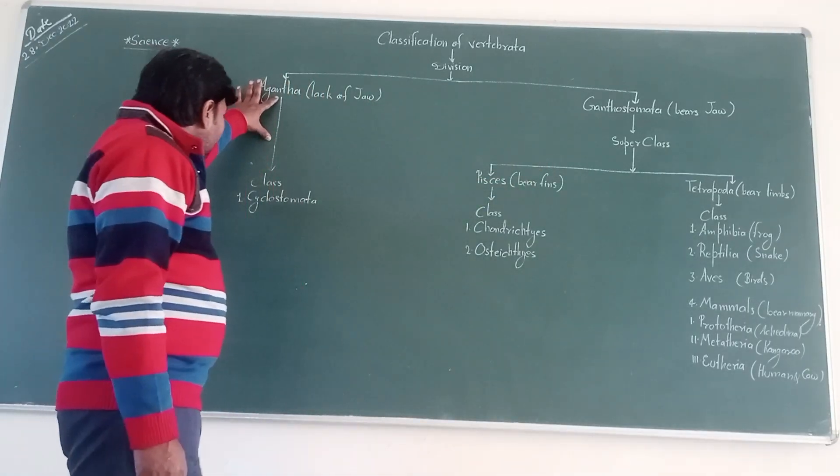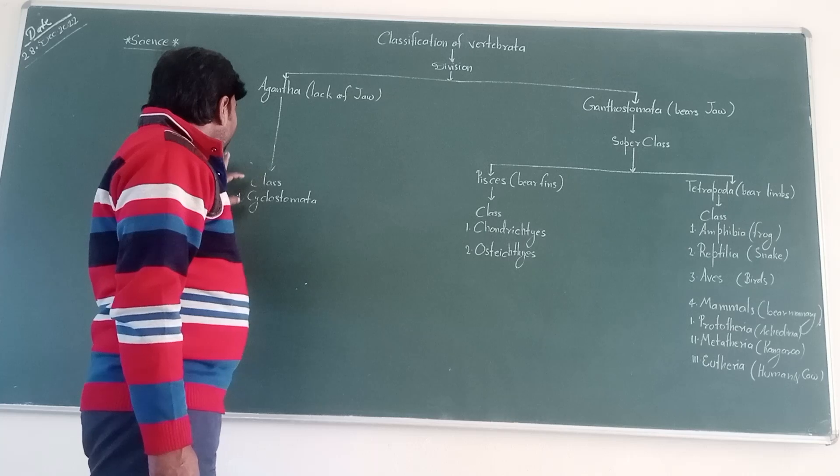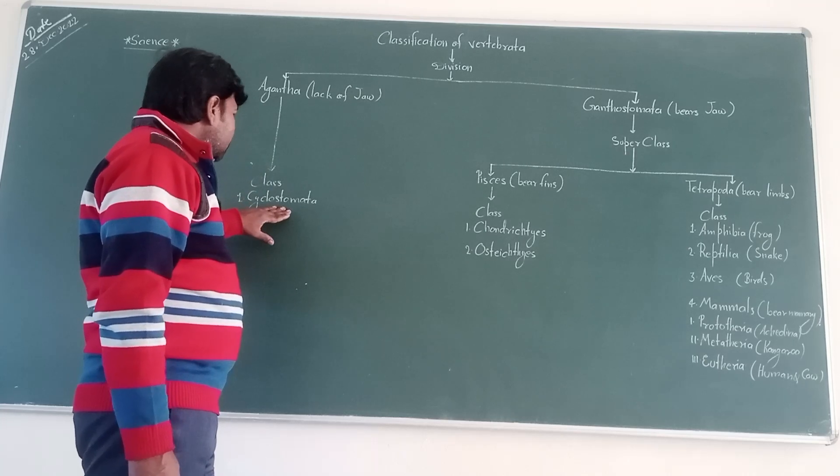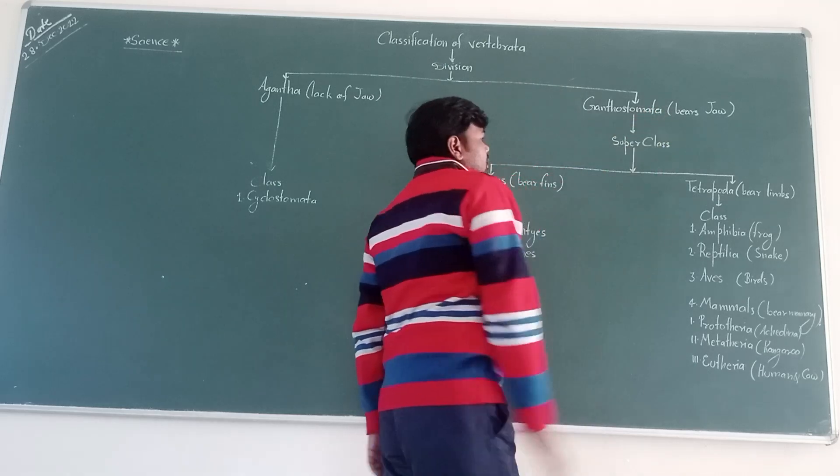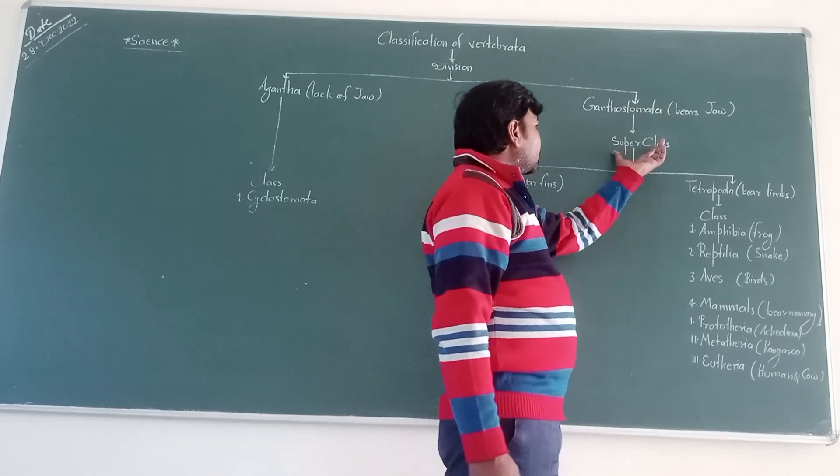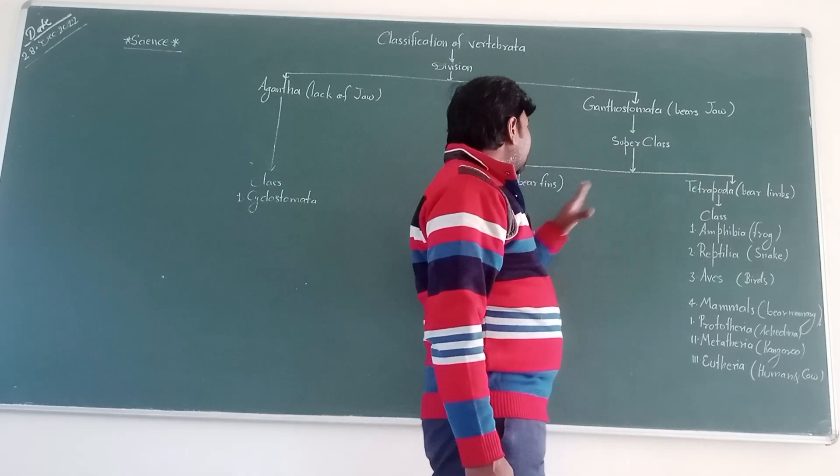Next, Agnatha are divided into class which is named Cyclostomata, and Gnathostomata are classified into superclasses which are also divided into classes.